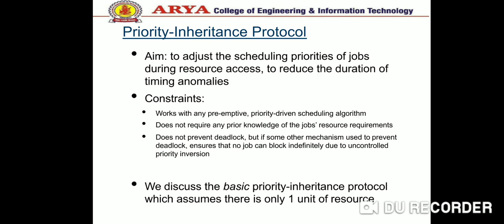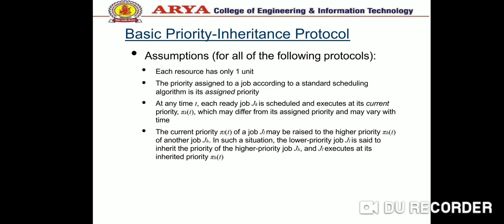Next is the Priority Inheritance Protocol. The Priority Inheritance Protocol adjusts the scheduling properties of a job during resource access to reduce the duration of time anomalies. In the Basic Priority Inheritance Protocol, jobs that are not blocked are scheduled according to a priority-driven algorithm, preemptively on a processor.